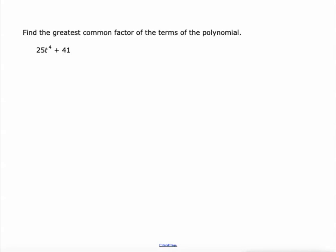This has slightly different directions here. It says find the greatest common factor of the terms of the polynomial. So it's a polynomial, and it's got terms here. So 25 and 41, what's their greatest common factor?